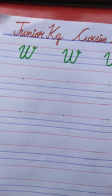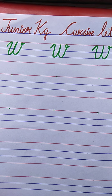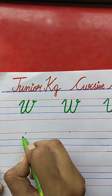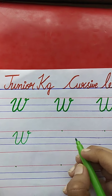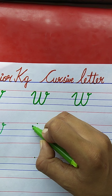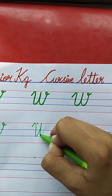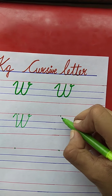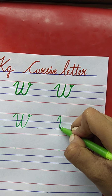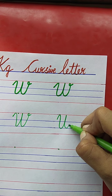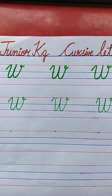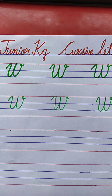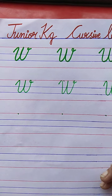Now what letter comes after V for Van, children? W. W for Watch. See here — this is W. Draw with me: curve, slanting line, curve, slanting line, one more curve, slanting line, and loop. W for Watch. The spelling of Watch: W-A-T-C-H.